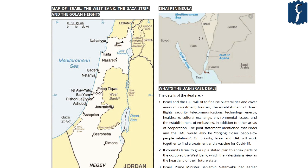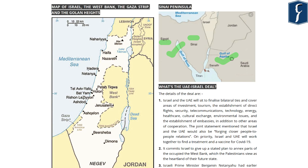Israel shares its border with Egypt's Sinai Peninsula. It is also important to look at the location of the Gulf of Suez and the Gulf of Aqaba, both of which are located in the Red Sea. Let us now look at the map of Israel, the West Bank, the Gaza Strip, and the Golan Heights.